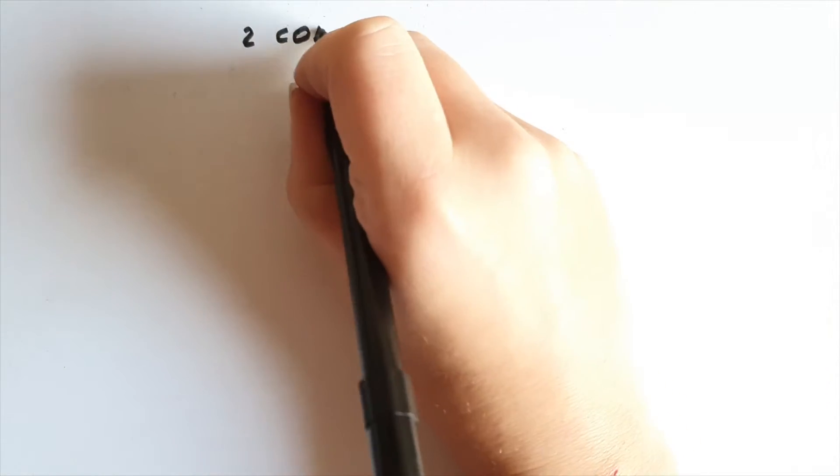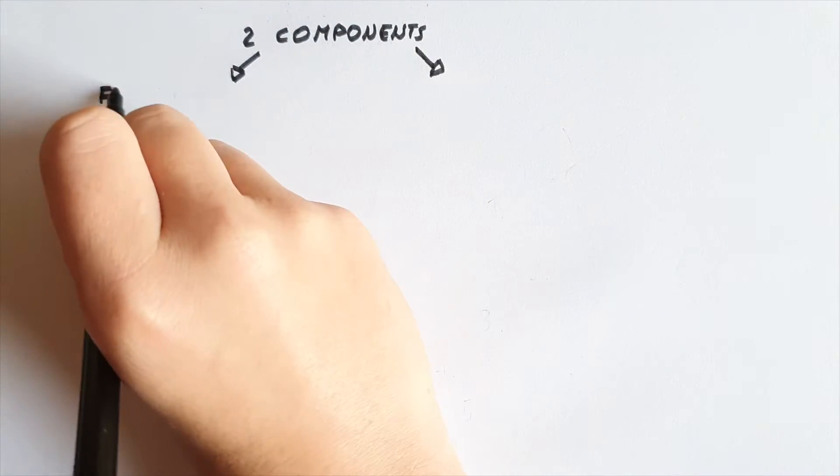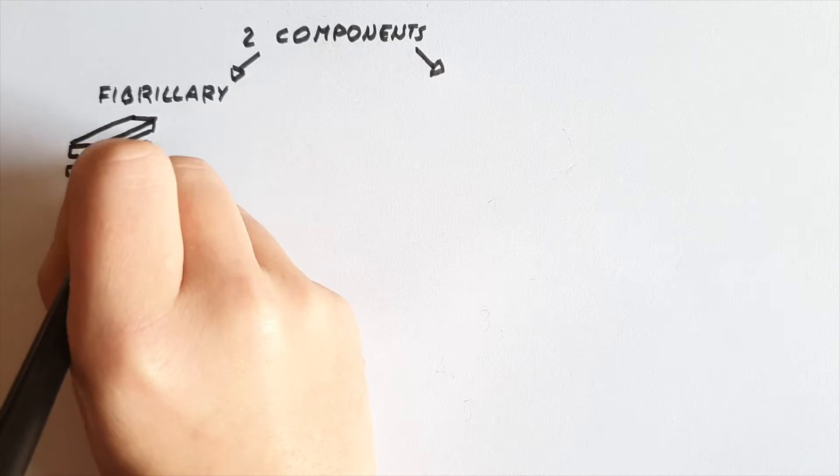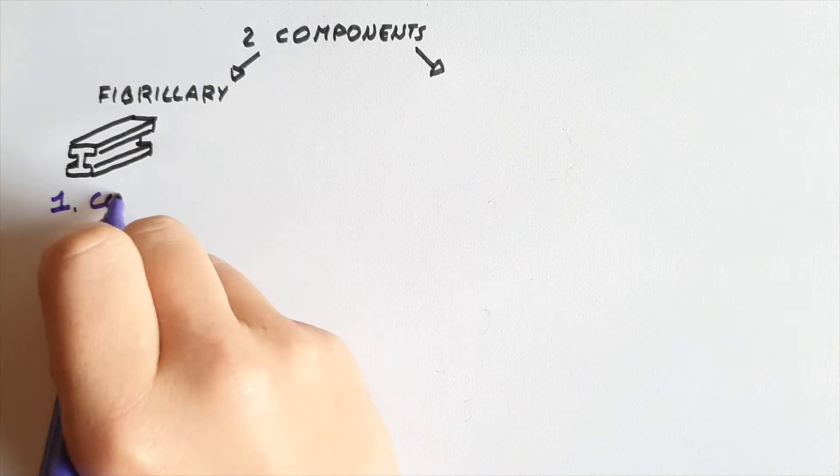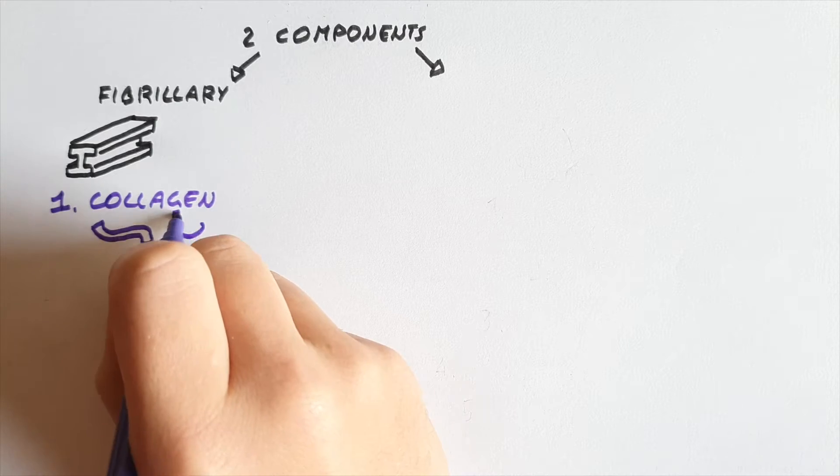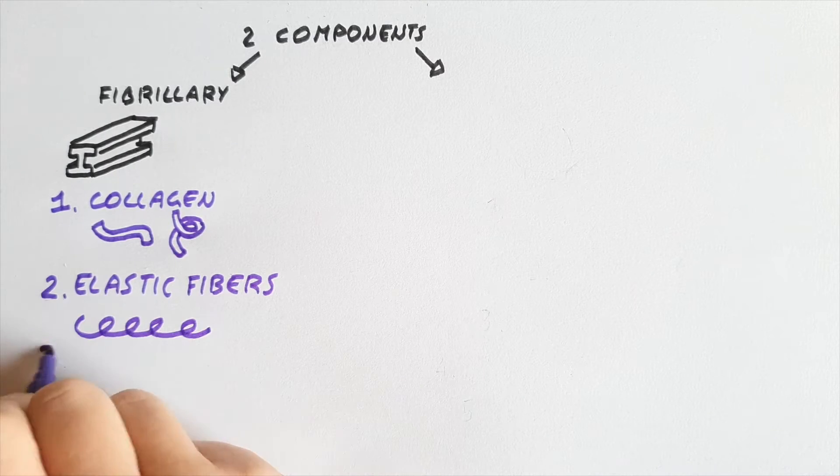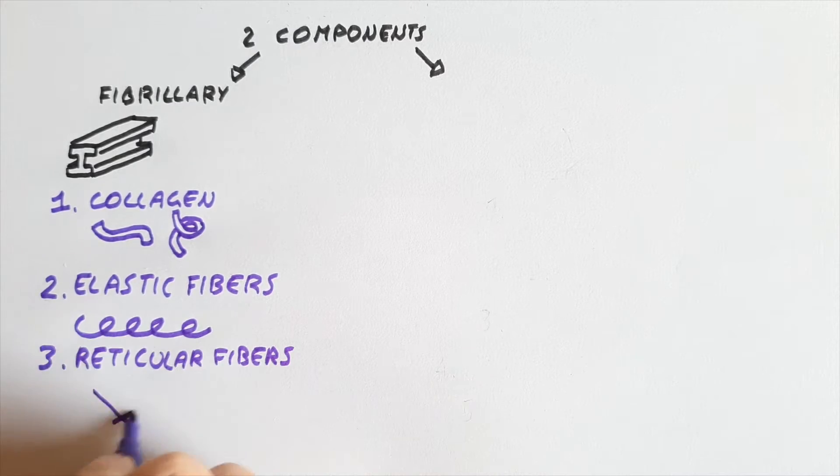In the extracellular matrix, two components can be found: the fibrillary component and the ground substance. The fibrillary components form the supporting structure of the tissue. These are collagen fibers, elastic fibers, and reticular fibers.